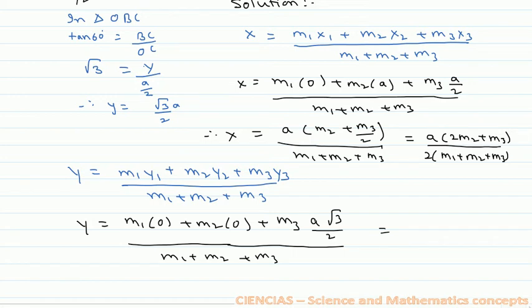Which equals (√3·m3·a) / [2(m1 + m2 + m3)].